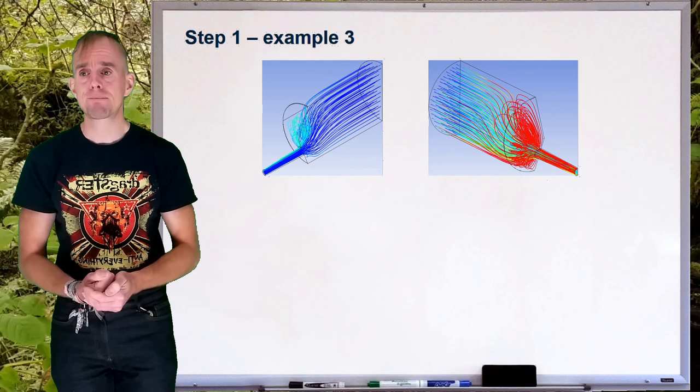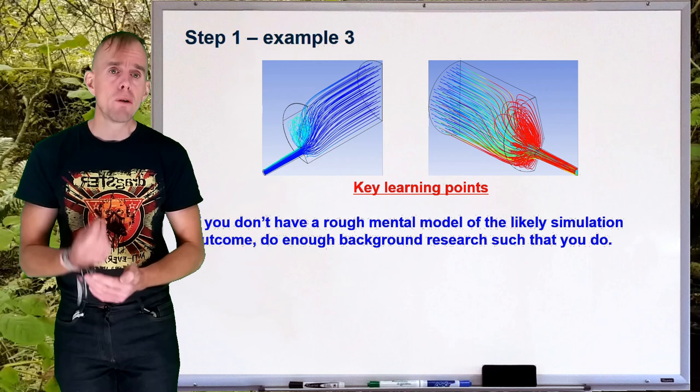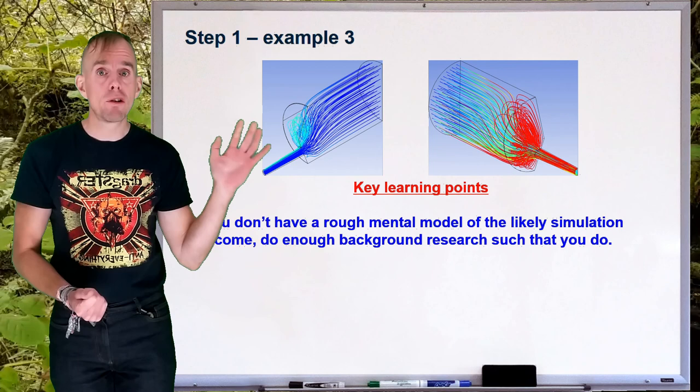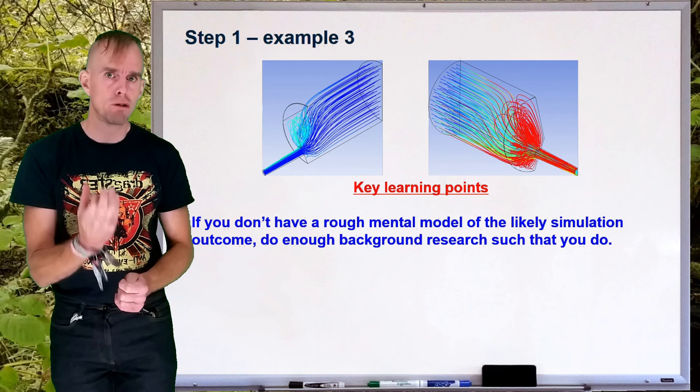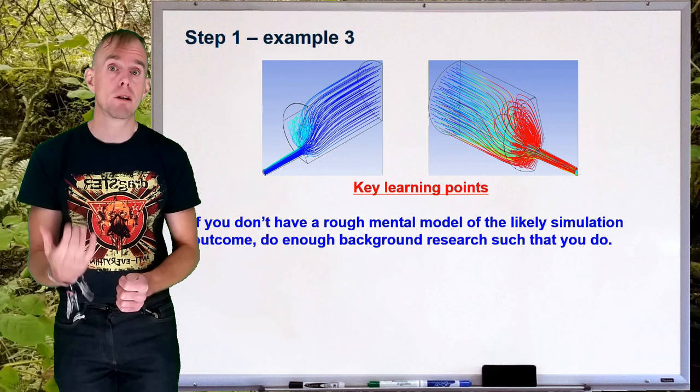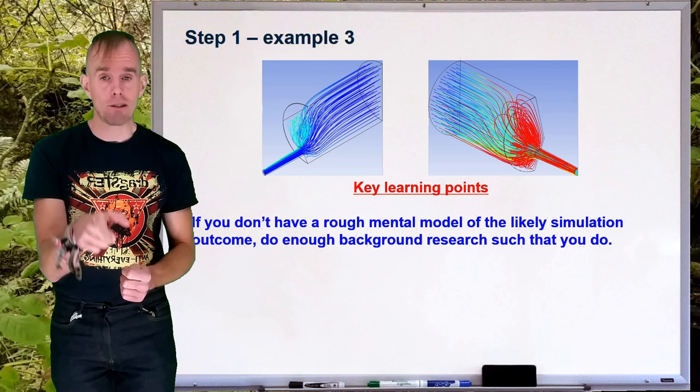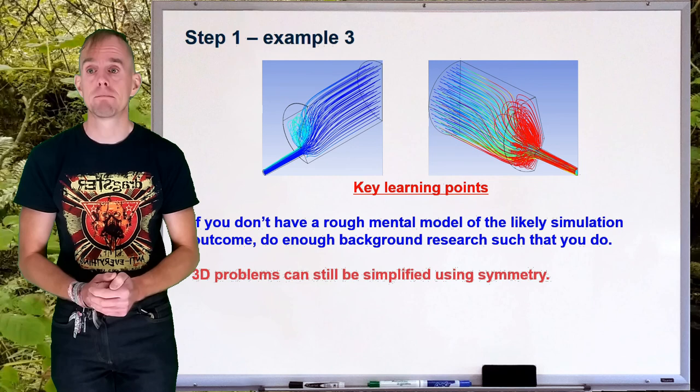So, some key learning points here for you. A good engineer will typically know the answer or at least expect roughly what the answer is before they work it out. So, what is your mental model like? If you don't have a rough mental model of the likely solution before you start it, do enough background research to make sure that you do. You need to be able to sanity check what the computer is doing. You don't want what the computer calculates to come as a surprise to you. Because what the computer calculates might be wrong. And you might need to go, ah, that's wrong, and actually recognise it from your mental model. So, do your background research before you start.